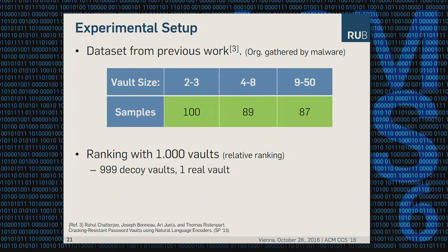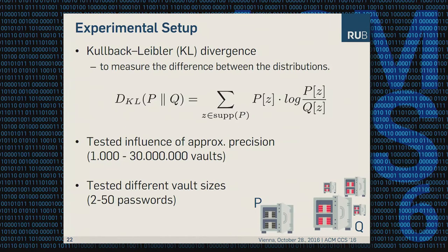The dataset was originally gathered via malware and is grouped into different vault-size groups. We tested three different groups and did the ranking with 1,000 vaults: 999 decoy vaults and one real vault. The 1,000 is arbitrary because we are only interested in the relative ranking. We used the Kullback-Leibler divergence to measure the difference between the currently observed vault and the decoy distribution.